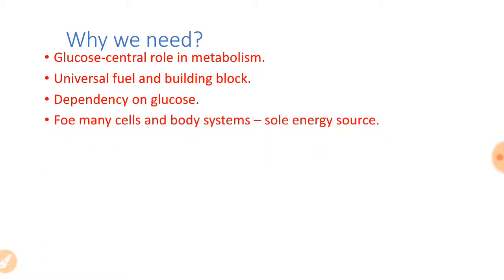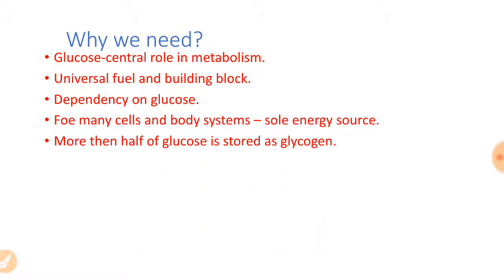So for many cells and body systems — including the nervous system, RBCs, erythrocytes, testes, renal medulla, and embryonic tissues — glucose is essential. An important point is that our brain requires about 120 grams of glucose each day.